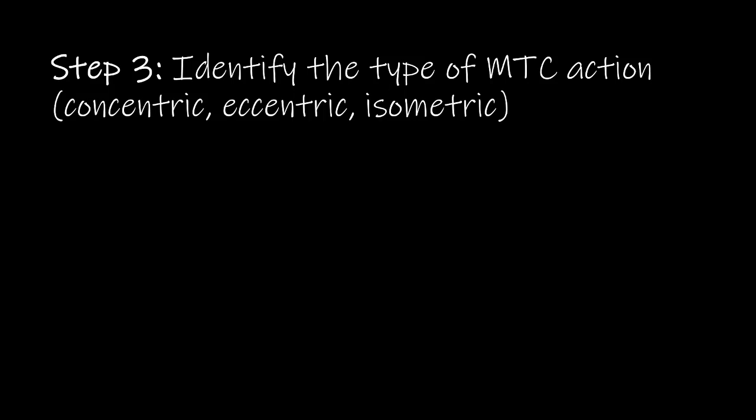For Step 3, we identify the type of MTC action, whether it's concentric, eccentric, or isometric. We will use a decision diagram to guide our thinking. First, we identify the joint motion and the effect of the external force. Then we have to ask ourselves a question about the movement direction and relate that to the external force — in other words, what is the direction of the joint motion in relation to the direction of the effect of the external force?